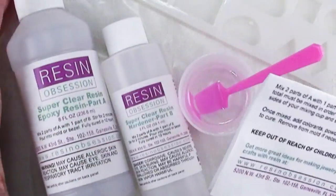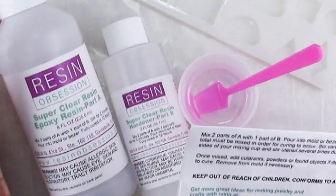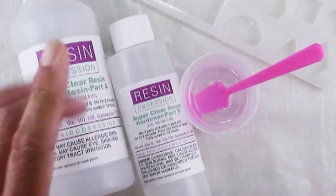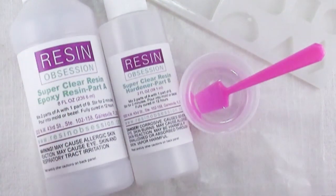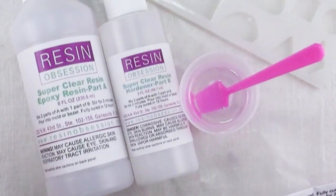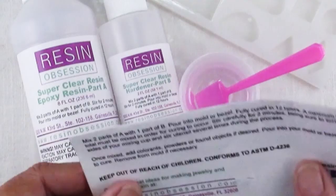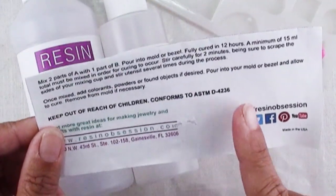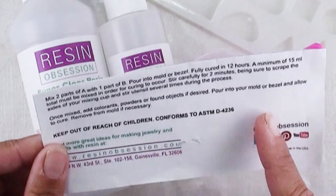This one for example is a two-part resin but you mix two parts of A to one part of B. You can kind of tell by the difference in the size of the bottles and some are by weight and some are by volume so you want to be very careful that you follow those directions exactly.